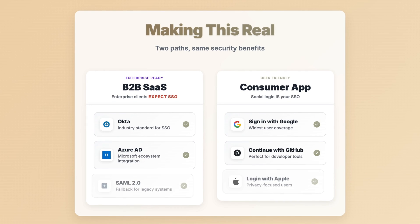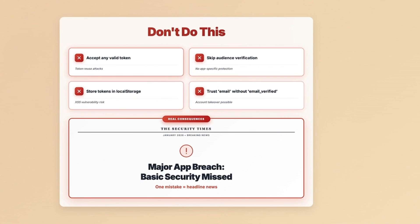Want to implement this? Building B2B SaaS? Enterprises expect SSO — non-negotiable. Support Okta, Azure AD, maybe SAML for the stragglers. Consumer app? Social login is your SSO: Google, GitHub, Apple — pick your providers and go. Quick reality check on what not to do: never accept just any valid token, never skip the audience check, don't store tokens in local storage, and that email claim? Check if it's verified. Miss any of these and you might be tomorrow's breach headline.